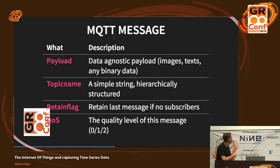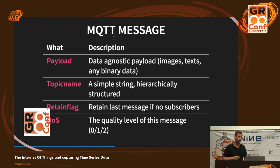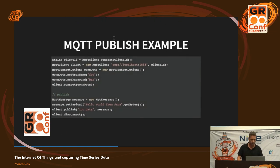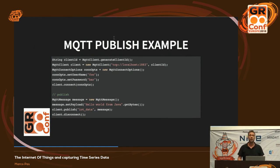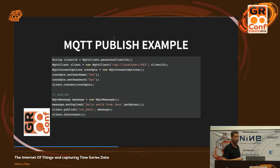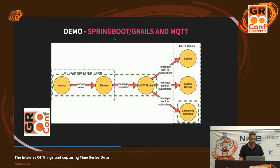An MQTT message is a payload that is data agnostic - you can send anything: images, text, et cetera. Be aware that not every cloud provider supports big messages; we had issues sending firmware to devices using MQTT, but AWS has a limit on message size. The topic name and retain flag are also part of the message. In Java code, publishing is simple: connect, create a message, set a payload, publish it, and disconnect. That's it.